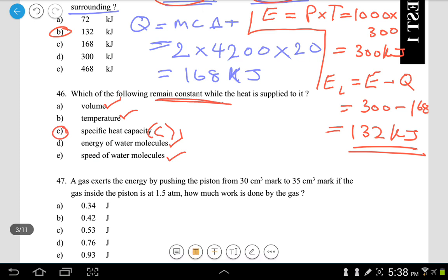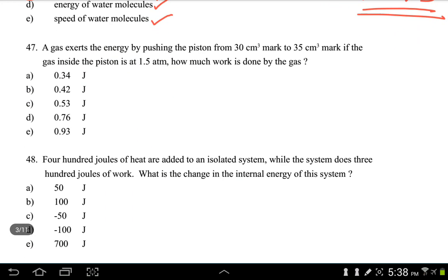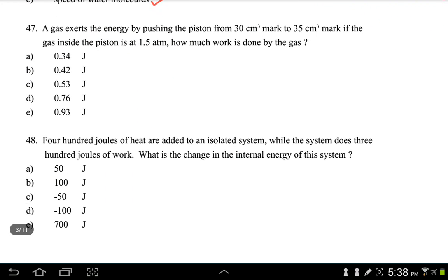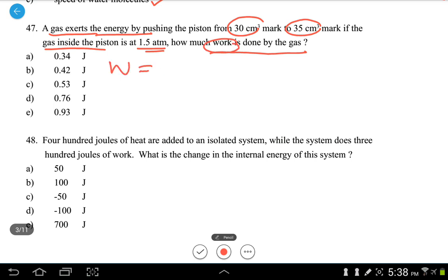Unless you change the substance. Let's see number 47. Number 47 says a gas exerts the energy by pushing the piston from 30 cm cubed to 35 cm cubed. The gas inside the piston is at 1.5 atm. How much work is done by this? So if you're pushing the piston, you have to recall the formula for work, which is P multiplied by delta V.